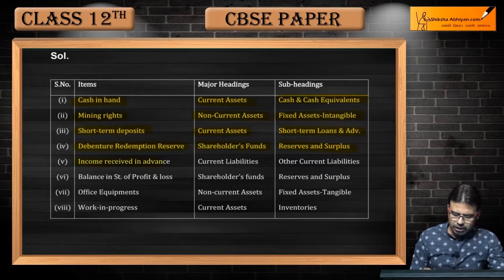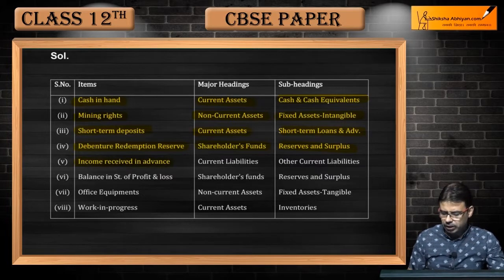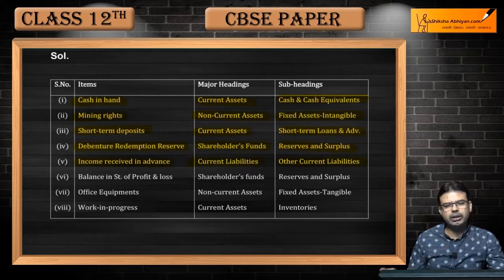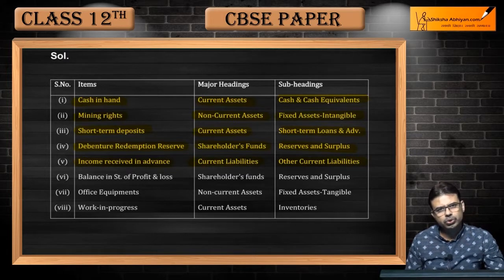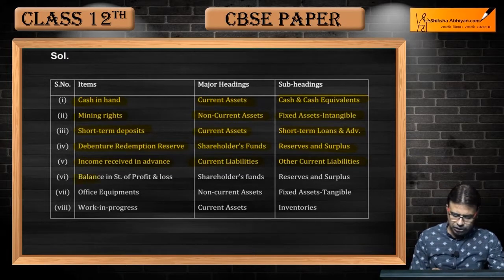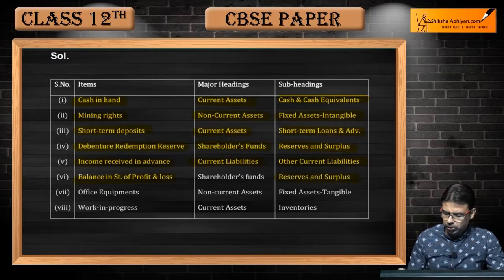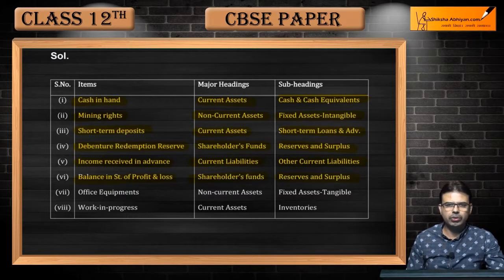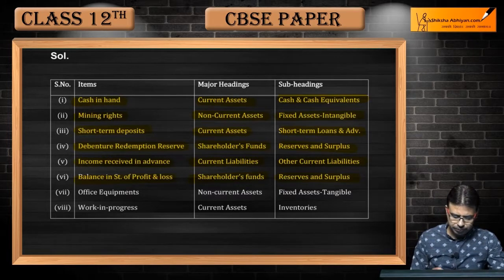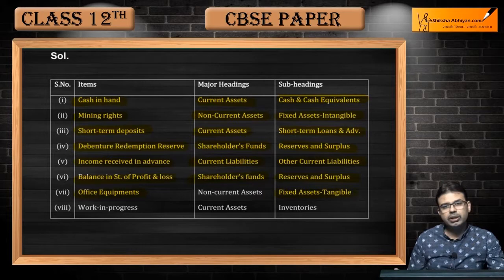Income received in advance is a current liability — it is shown under other current liabilities under the heading current liabilities. The balance in the statement of profit and loss is part of reserves and surplus, and that is part of shareholders' funds — it is a subheading under shareholders' funds.